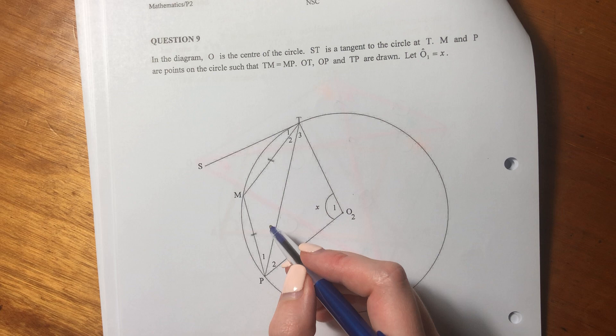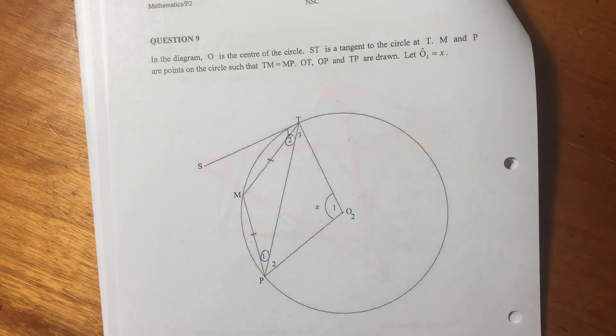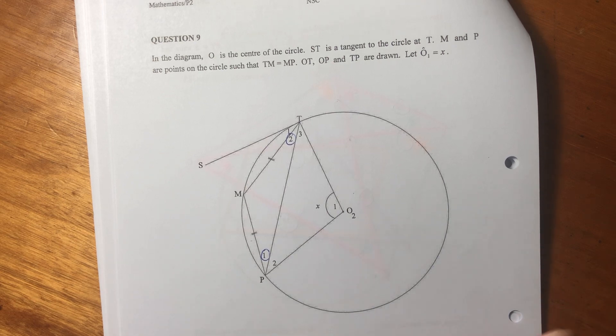You should be thinking that automatically. Then we have OT, OP and TP are drawn. Those are just different lines. And then it says, let O1 equal X. So we've kind of looked at the scenario.